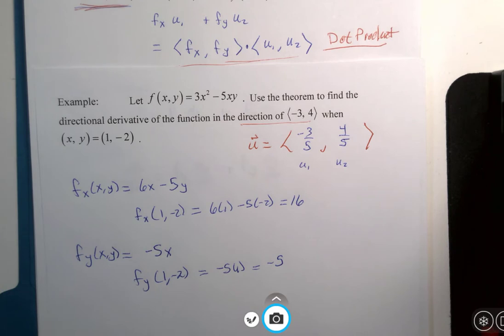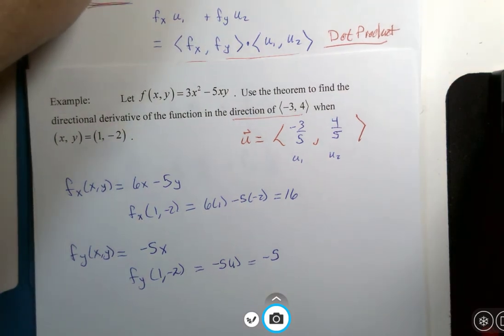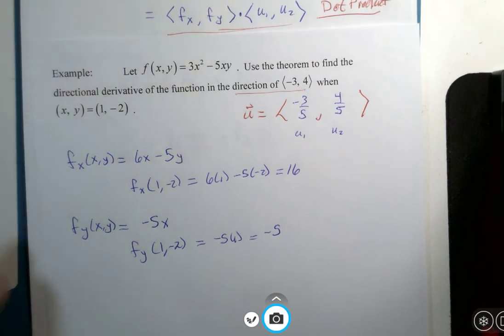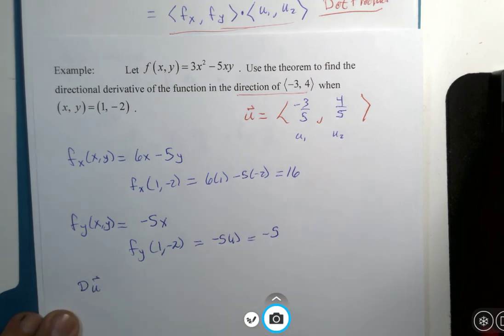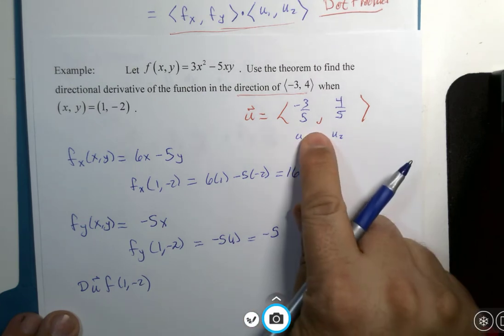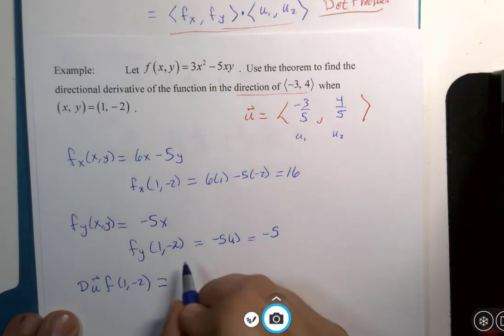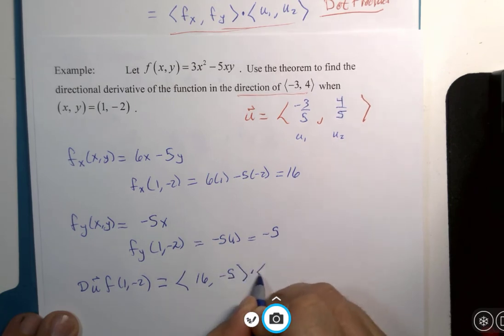Now, the formula. The formula says that our, and let's just go a little bit further up here, but I don't want to lose everything. I need that dot product showing. There we go. The directional derivative of this function at that point in that direction is the dot product of these two partial derivatives and the unit vector.